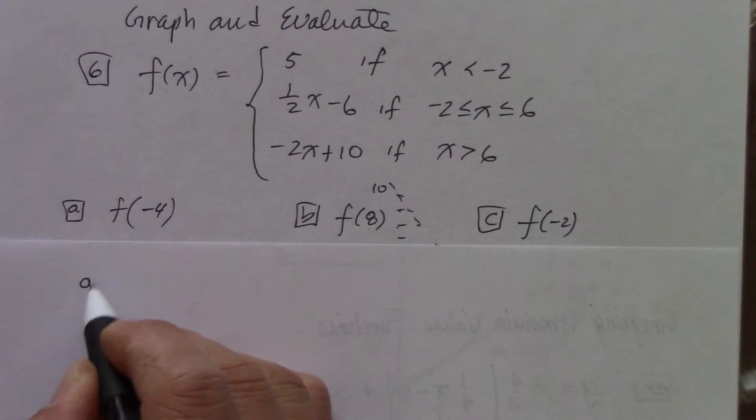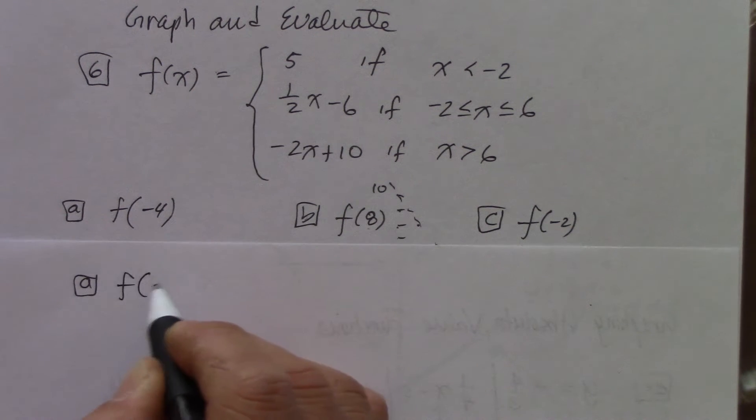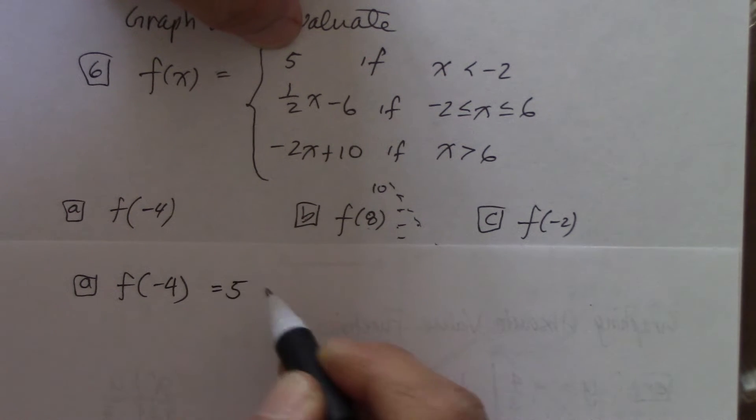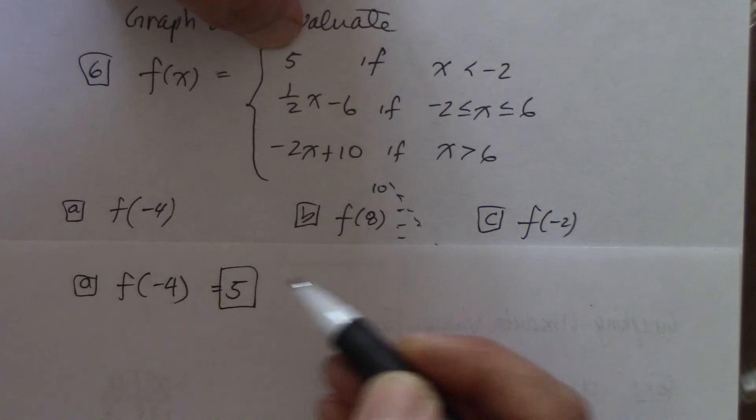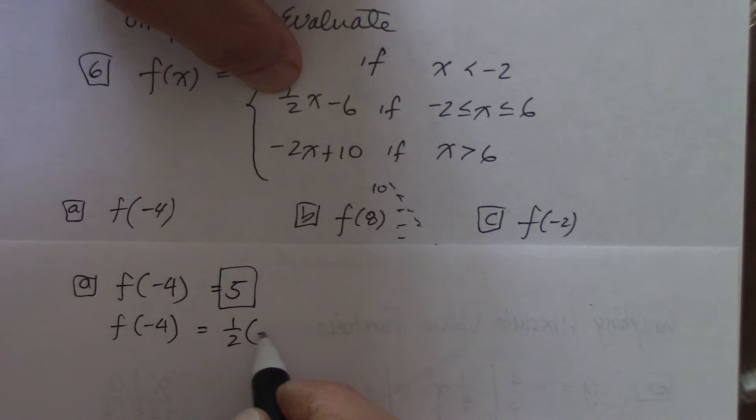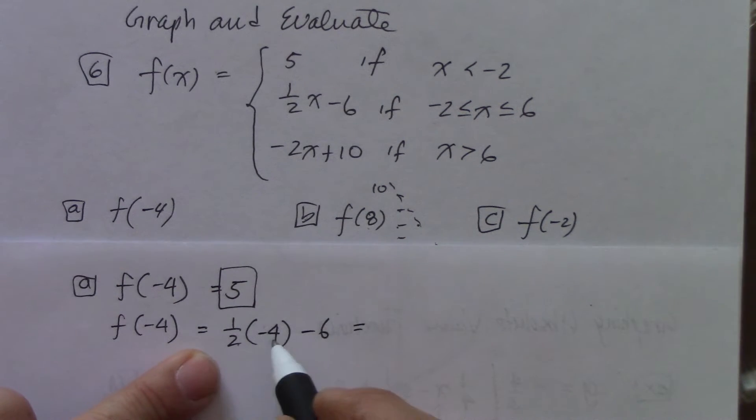Okay, here's f of negative 4. For the first one is equal to 5. That doesn't change anything. It's just that. However, f of negative 4 that goes into one half x, so negative 4 goes in here.